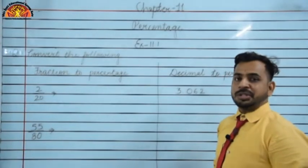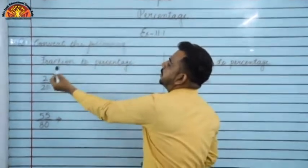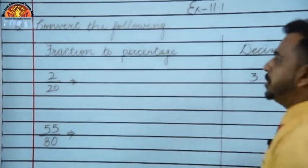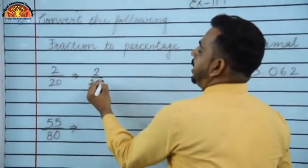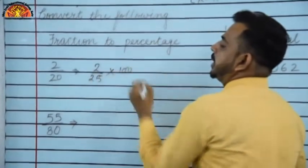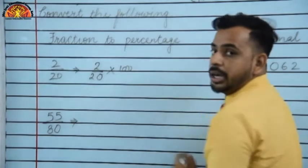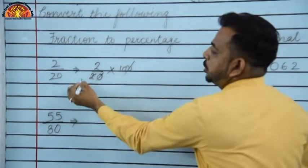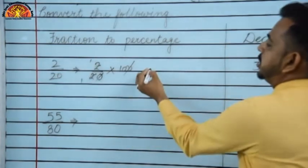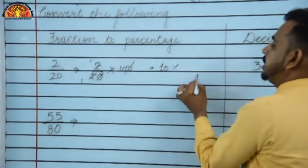Now let me discuss question numbers 5 and 6: convert the following fractions to percentage. First: 2/20 × 100. Simplify — cancel zeros — 2 ones are 2, and result is 10. Put the percentage sign — answer is 10%.